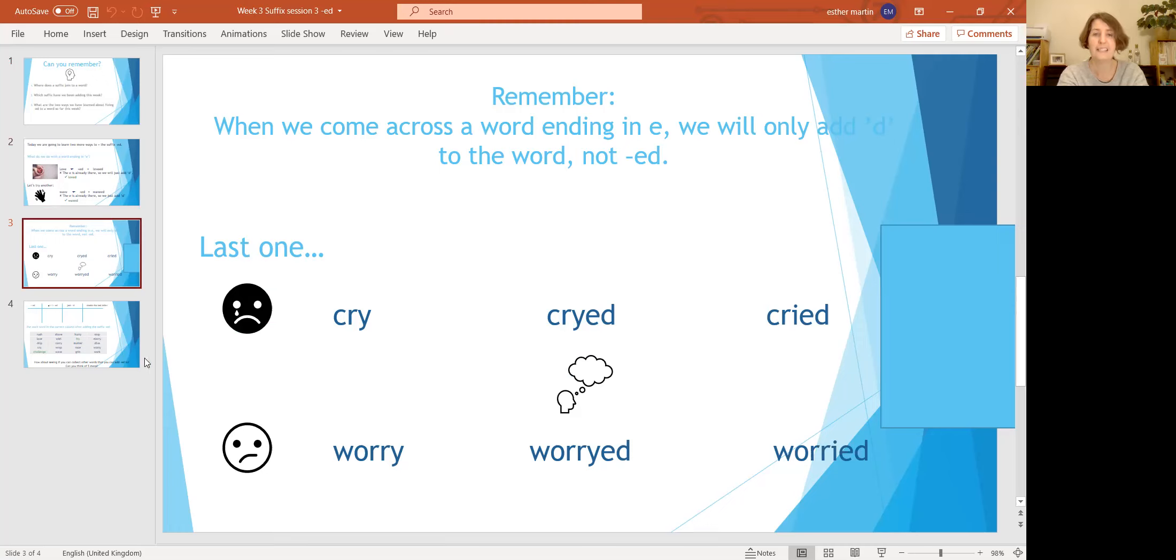So then we have the word 'cried', 'cried', and the word 'worried'. So we've now learned four different rules for adding -ed, and what I'd like you to do as an activity today, I would like you to try and put into practice all that we've learned. So what I've done is I have made a table.